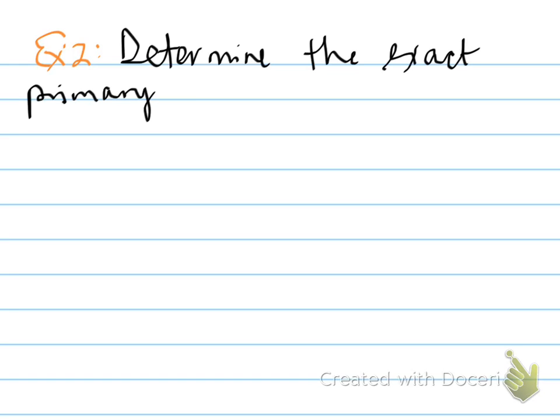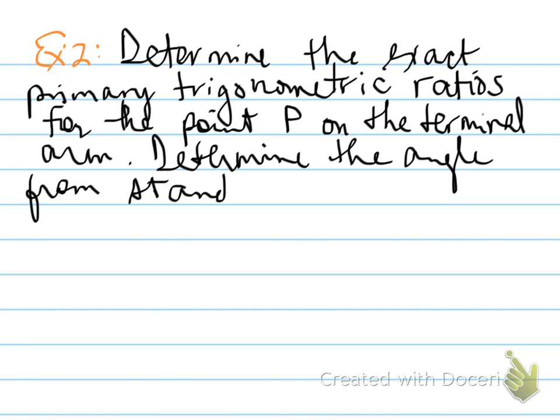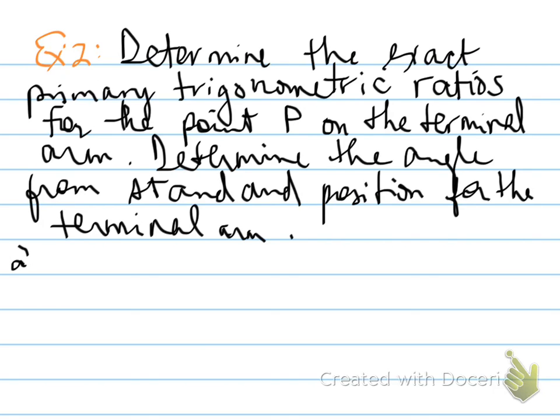Okay, we're on to example number two. Determine the exact primary trigonometric ratios for the point P on the terminal arm. Determine the angle from standard position for the terminal arm.